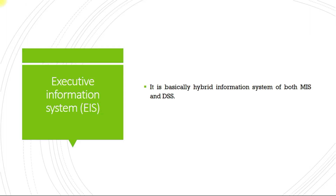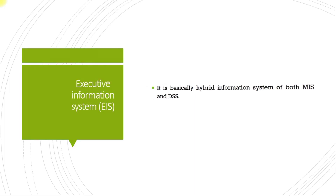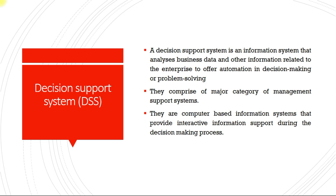Executive information system is a hybrid information system of both MIS and DSS. Decision support system, or DSS, is an information system that analyzes business data and other information related to the enterprise to offer automation in decision-making or problem-solving. They are computer-based information systems that provide interactive information support during the decision-making process.